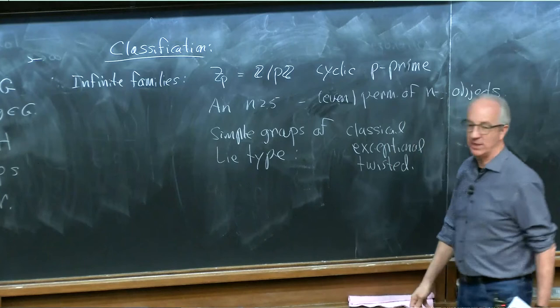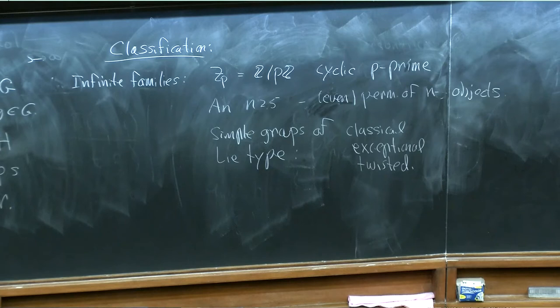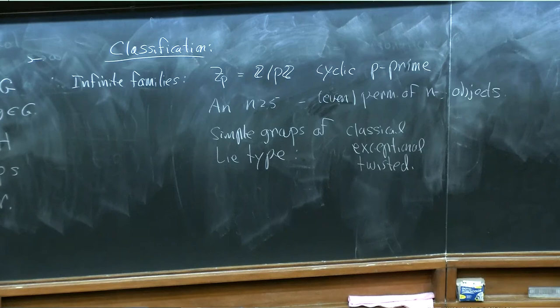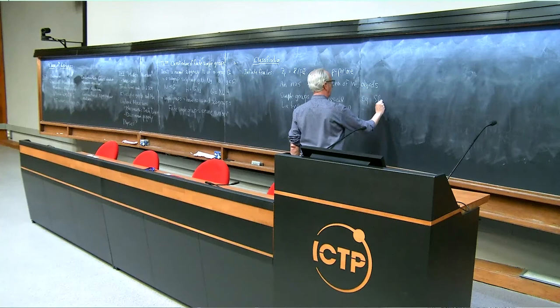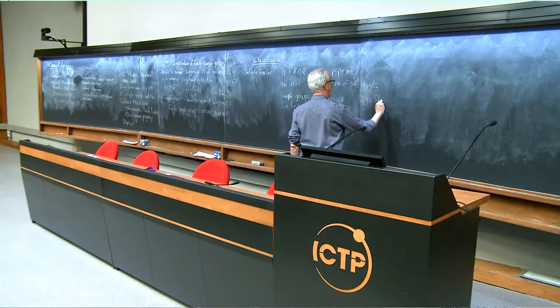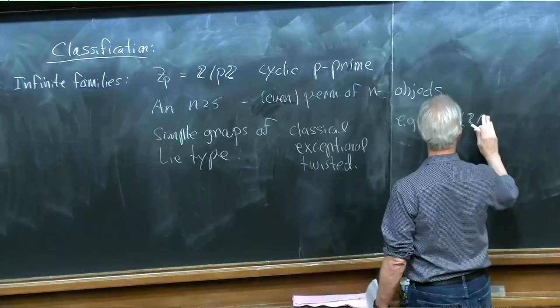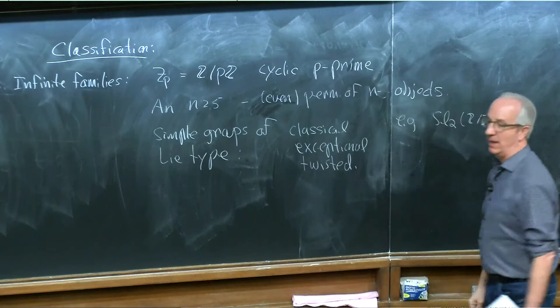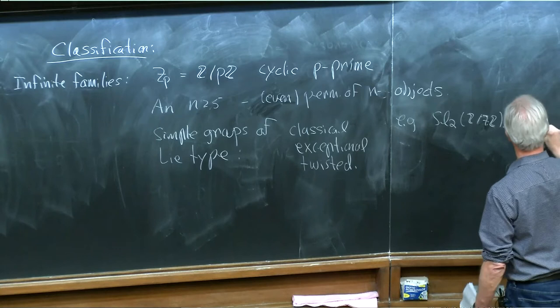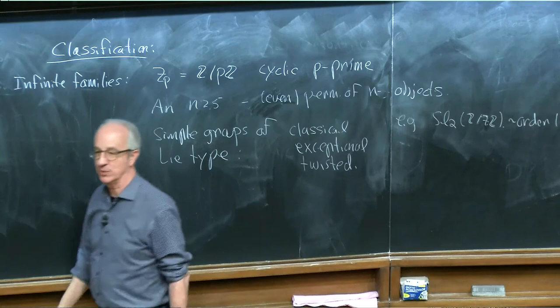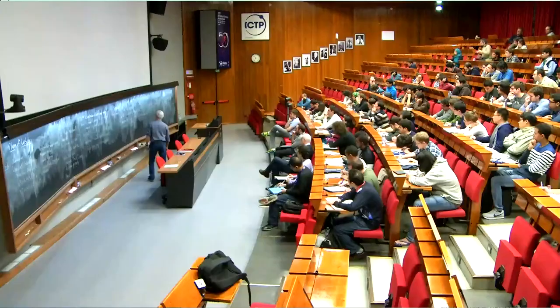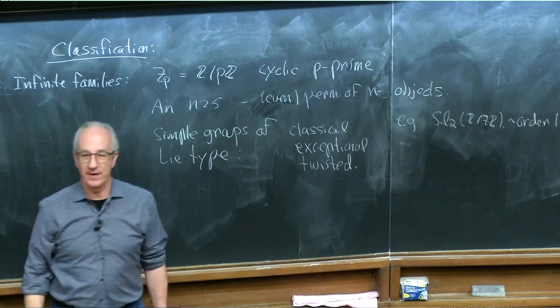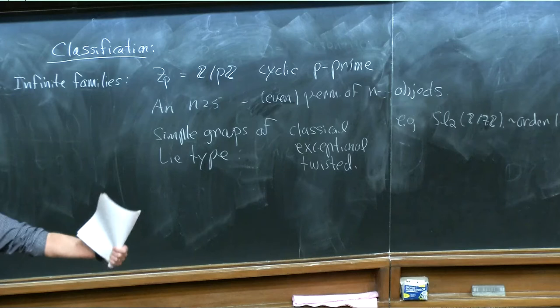Basically, the groups of Lie type involve taking Lie groups you're familiar with and writing them as groups over finite fields. For example, you can take SL(2) — 2 by 2 matrices with determinant 1 — over the group with 7 elements, and that defines a finite simple group of order 168. Similarly, you can take symplectic groups, orthogonal groups, and there's even a way of doing this for exceptional groups, giving roughly 6 or 7 infinite families where you look at classical matrix groups over fields with a finite number of elements.